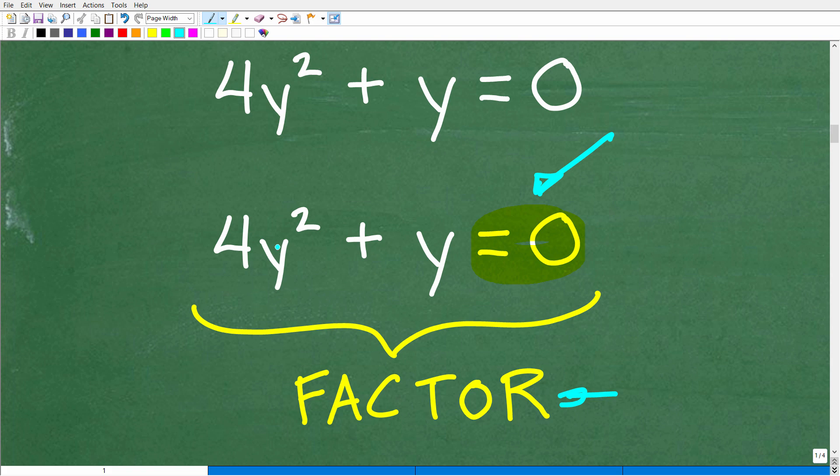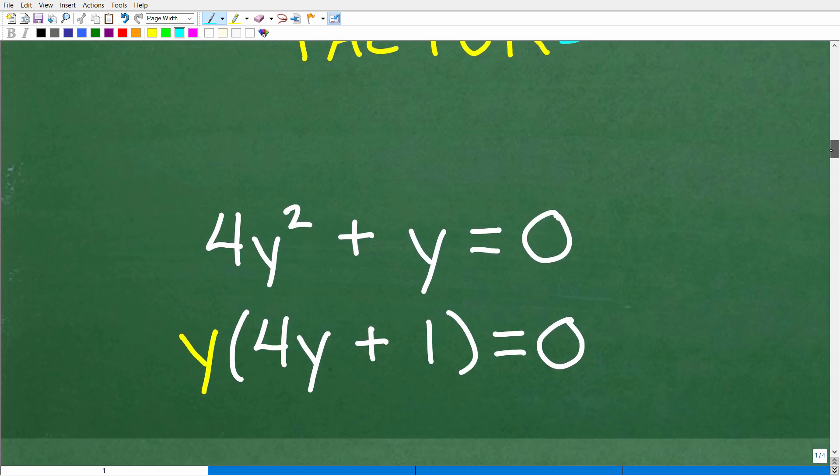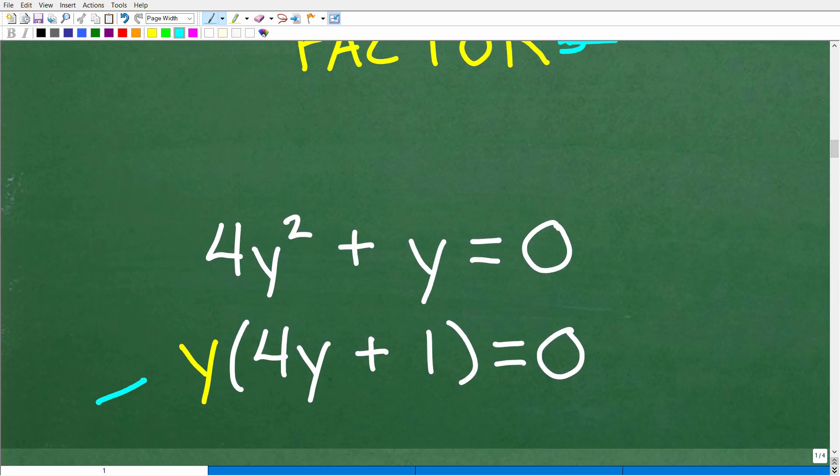Okay. So let's see if you can factor 4y squared plus y. So when we factor, we can factor out the greatest common factor, which is y. So it will look like this: y parentheses 4y plus 1 is equal to 0.